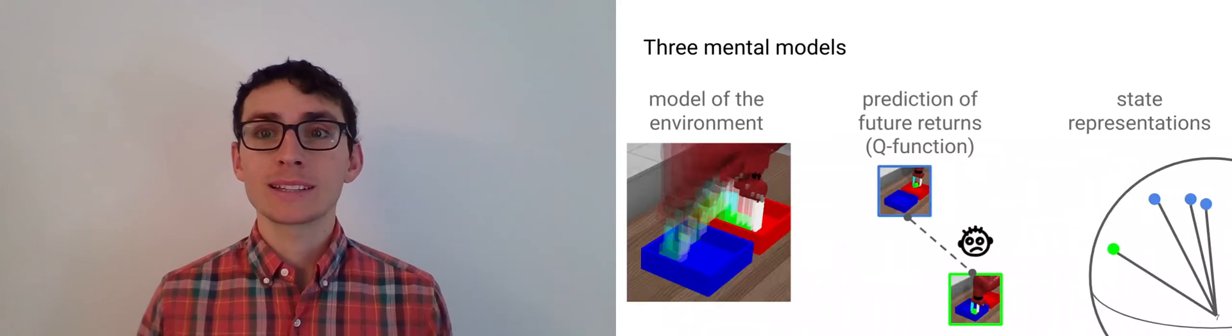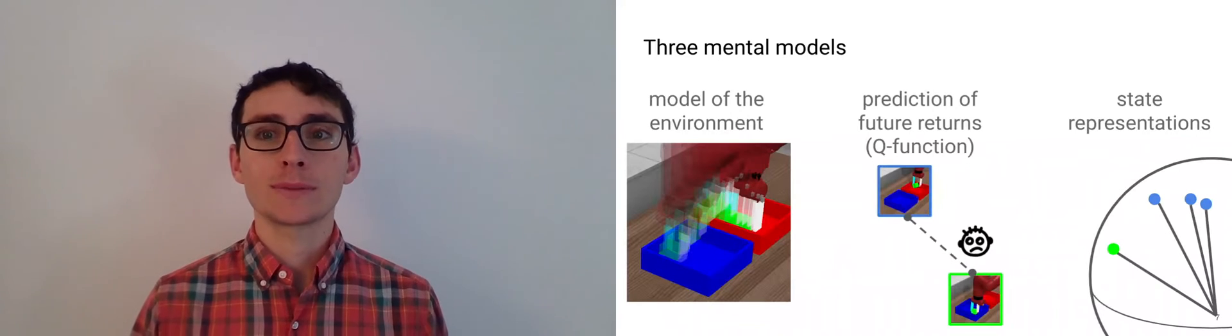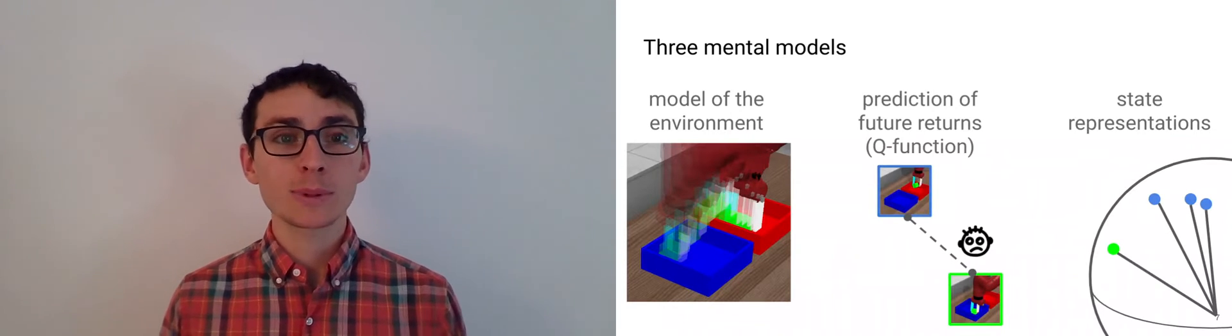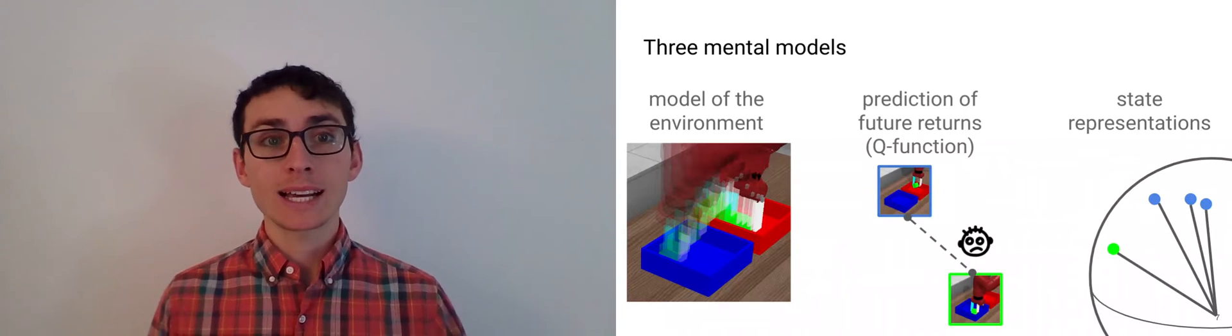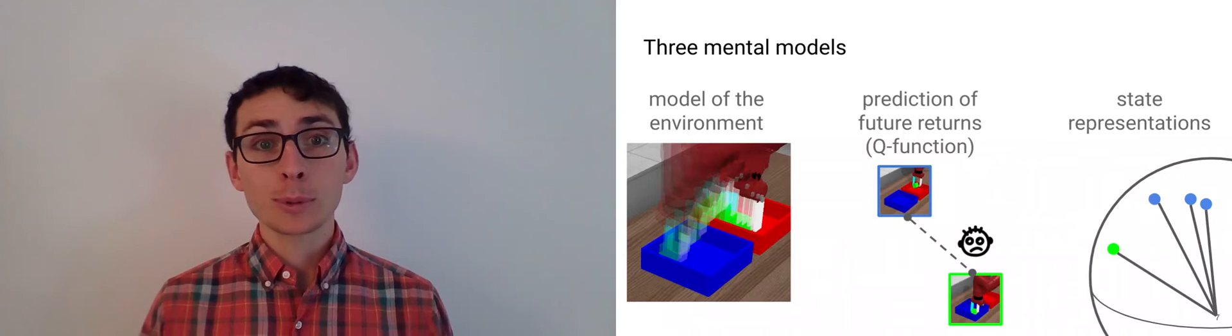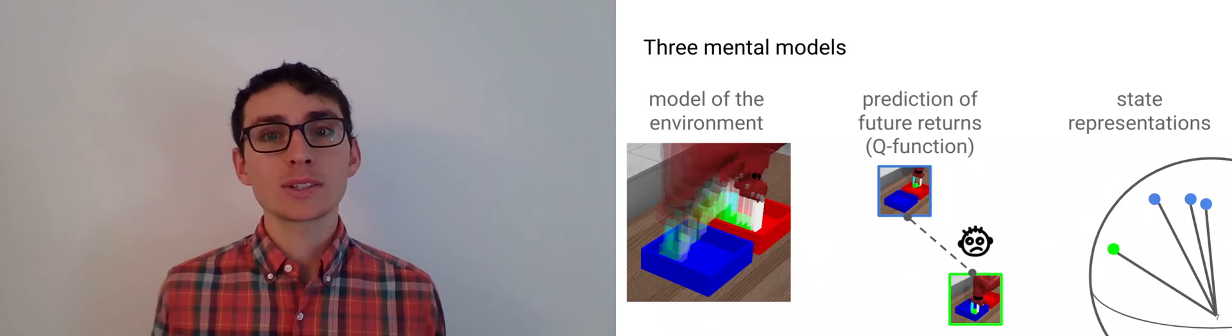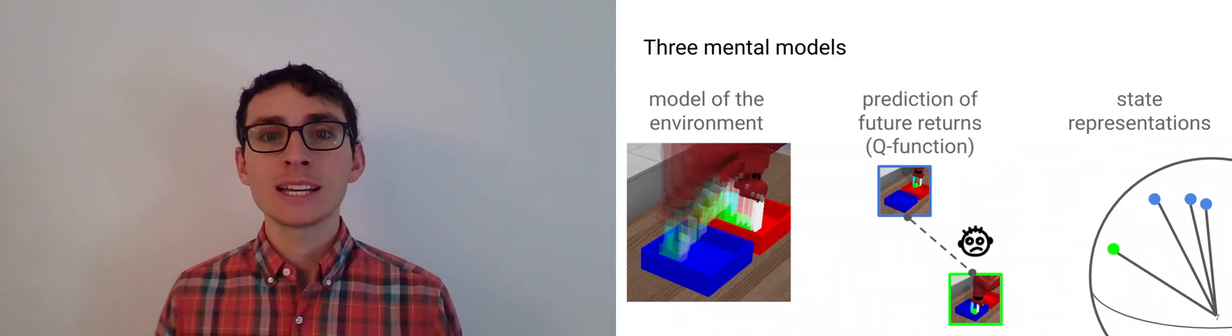There are a number of ways of viewing what contrastive learning gives us. One is that it gives us an implicit model of the world, something that allows us to predict what's going to happen, but doesn't require regressing to high dimensional outputs. It can also be viewed as giving us a predictor of the future returns or a Q function, and also gives us low dimensional representations of states.